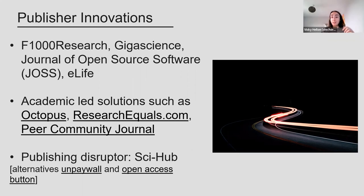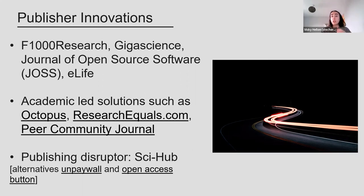I also wanted to mention Sci-Hub, which is always embroiled in controversy — basically a pirate site that illegally bypasses publishers' paywalls and allows you to download subscription articles. The founder, Alexandra Elbakyan, is often seen as the Robin Hood of publishing, but is frequently facing lawsuits for copyright infringement. There are also legal ways of finding open versions of papers: Unpaywall searches the net for an open version of a paper, and the Open Access Button does the same — it also lets you send a request to authors for a copy of the paper, which you can always do. If you come across a subscription journal article, you can just email the authors and ask for a copy, which is completely fine and free.